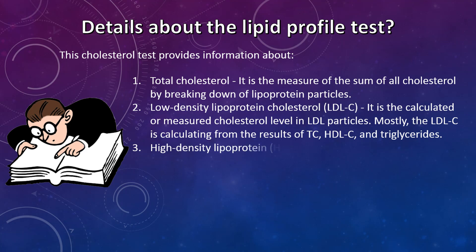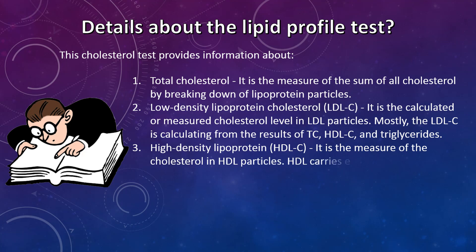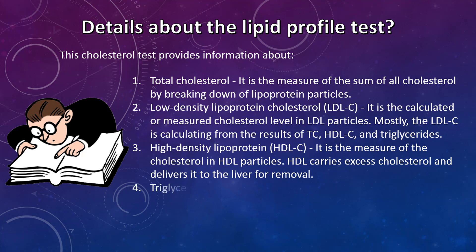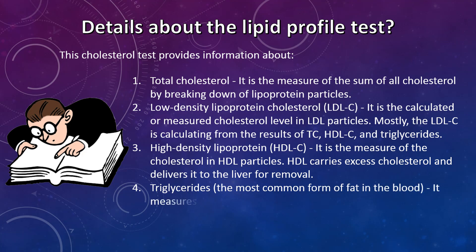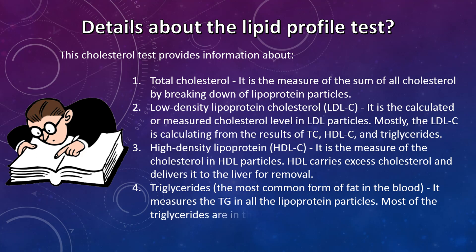High density lipoprotein cholesterol (HDL-C) is a measure of the cholesterol in the HDL particle. HDL-C carries excess cholesterol and delivers it to the liver for removal. Triglycerides are the most common form of fat in the blood. This test measures the triglycerides in all the lipoprotein particles. Most of the triglycerides are in the very low density lipoprotein (VLDL).